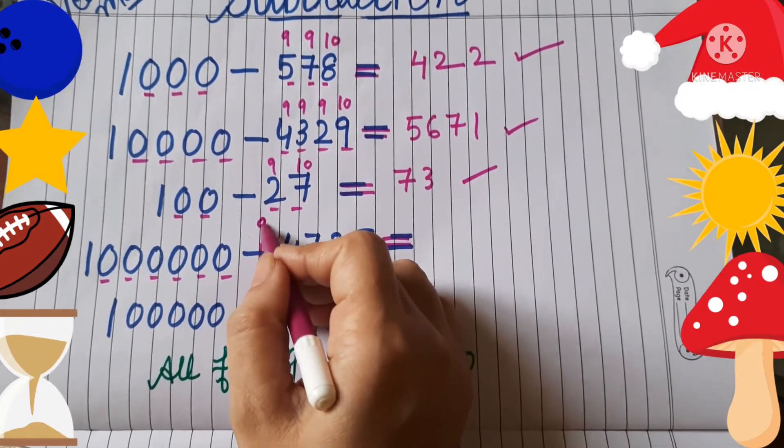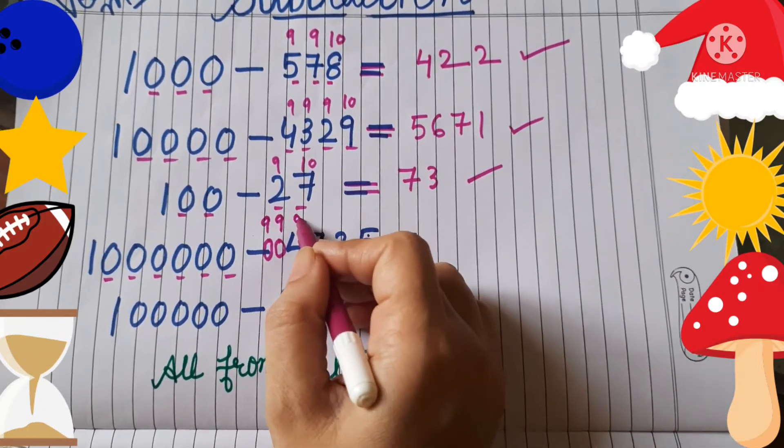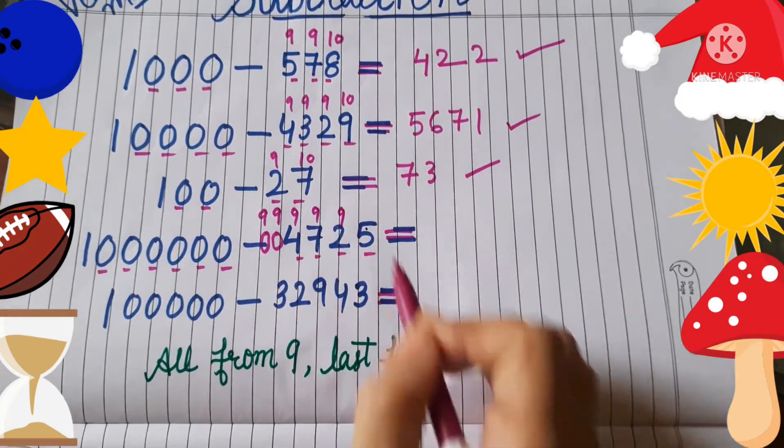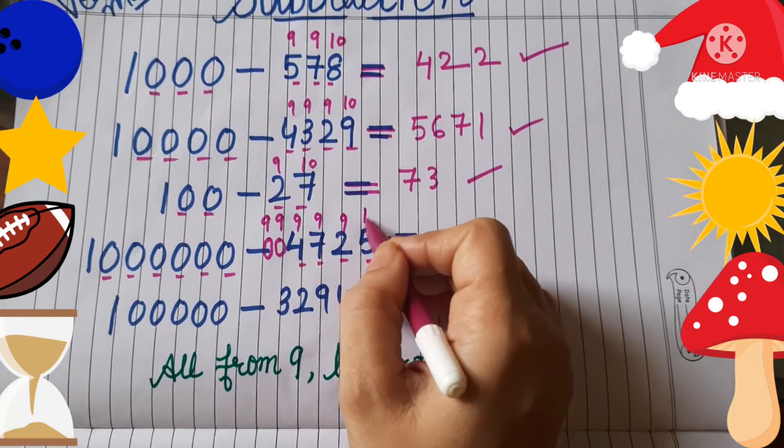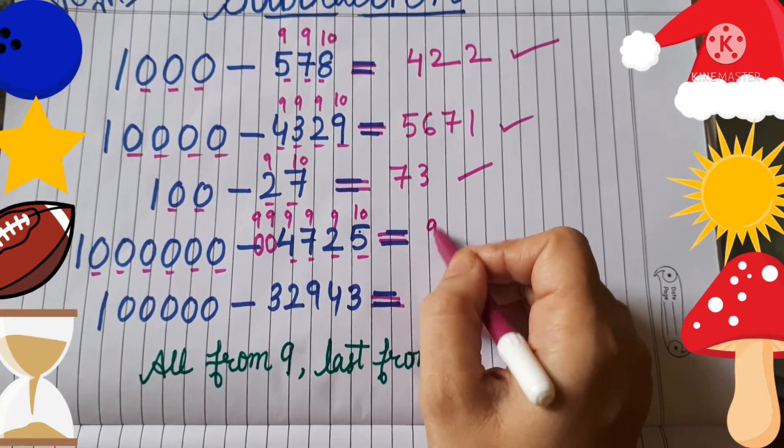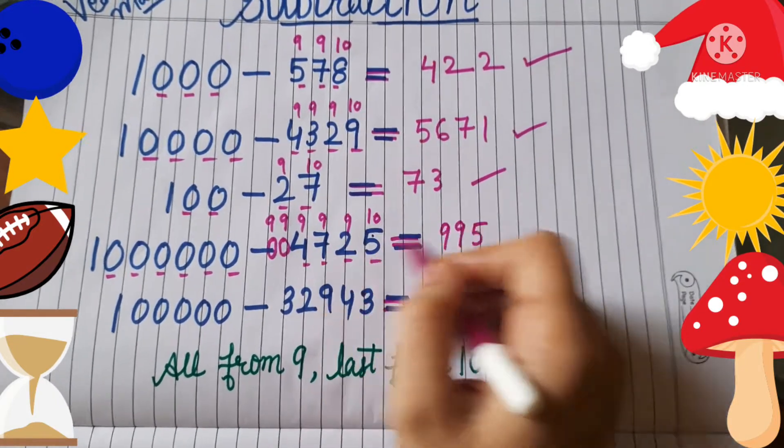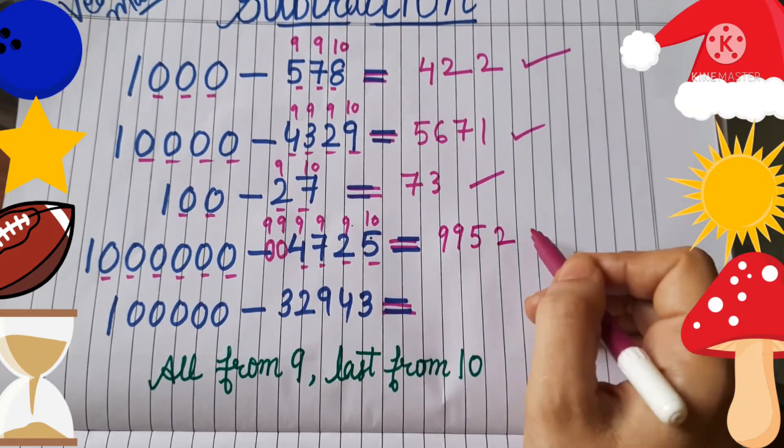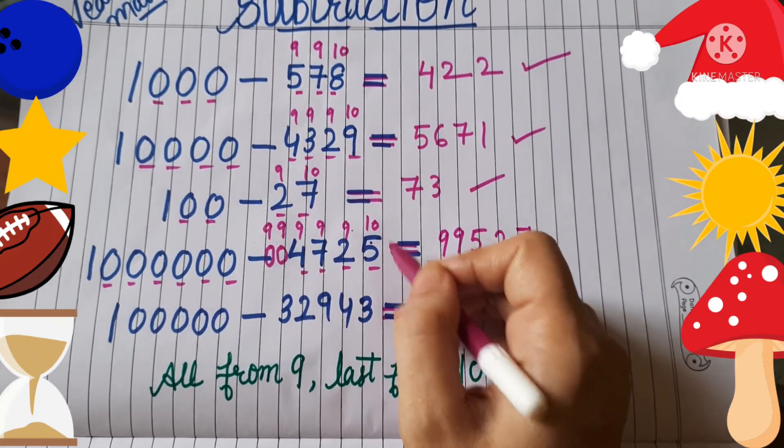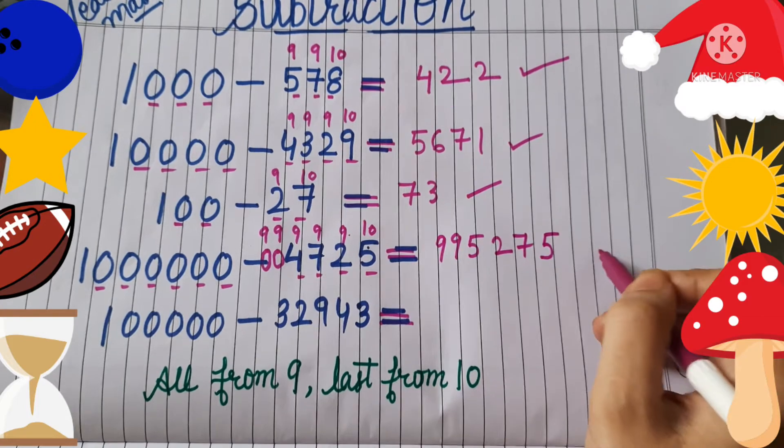Here we will write 9, 9, 9, 9, 9, but the last number from 10. 9 minus 0 is 9, 9 minus 0 is 9, 9 minus 4 is 5, 9 minus 7 is 2, 9 minus 2 is 7, 10 minus 5 is 5. That's done.